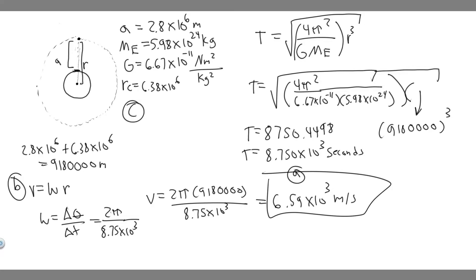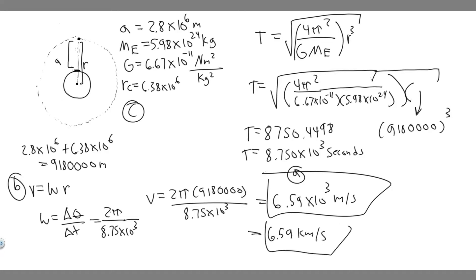So the answer to Part B is 6.59 times 10 to the 3 meters per second. We can also express this in kilometers per second — since there are 1,000 meters per kilometer, dividing by 1,000 gives us 6.59 kilometers per second. Write it however your teacher prefers.